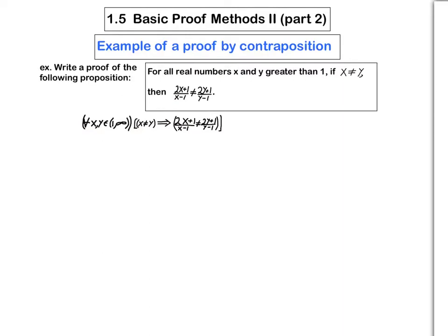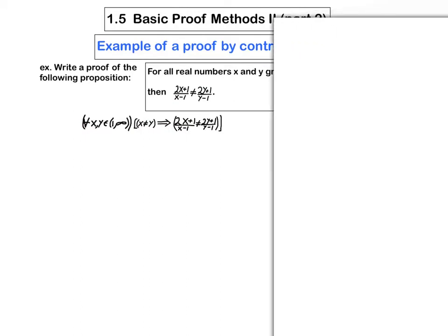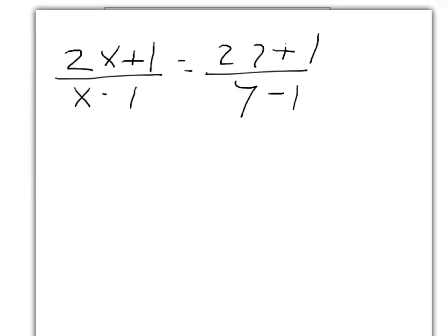So let's do some calculation to see how that should work. We want to show that 2x plus 1 over x minus 1 equaling 2y plus 1 over y minus 1 should ultimately imply that x equals y. So what should we do with that? Well, I guess the natural thing to do is to cross-multiply.